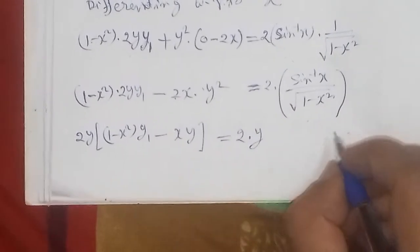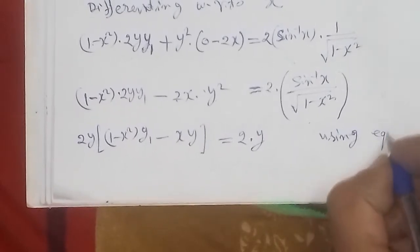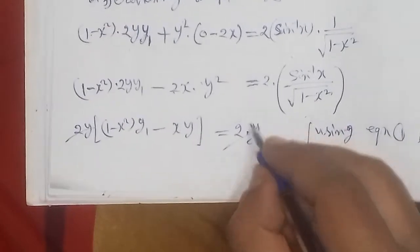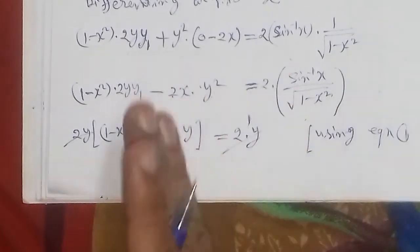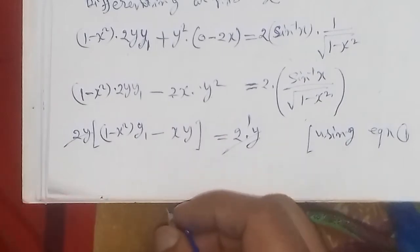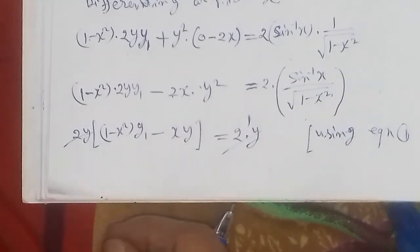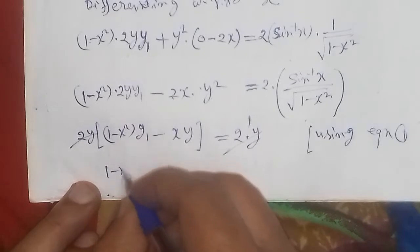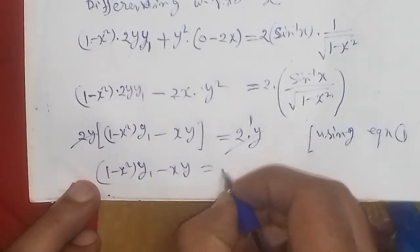Using equation number 1, taking 2y common, the 2y on both sides cancels. This simplifies to: (1 minus x square)·y₁ minus x·y is equal to 1. This is our simplified equation.